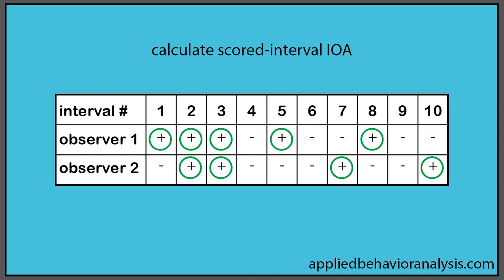Once you have that information, you are then going to count up the number of agreements, so look at intervals 2 and interval 3, in which both observers agreed, and divide that by the total number of observations in which one or more of the observers indicated a response occurred.